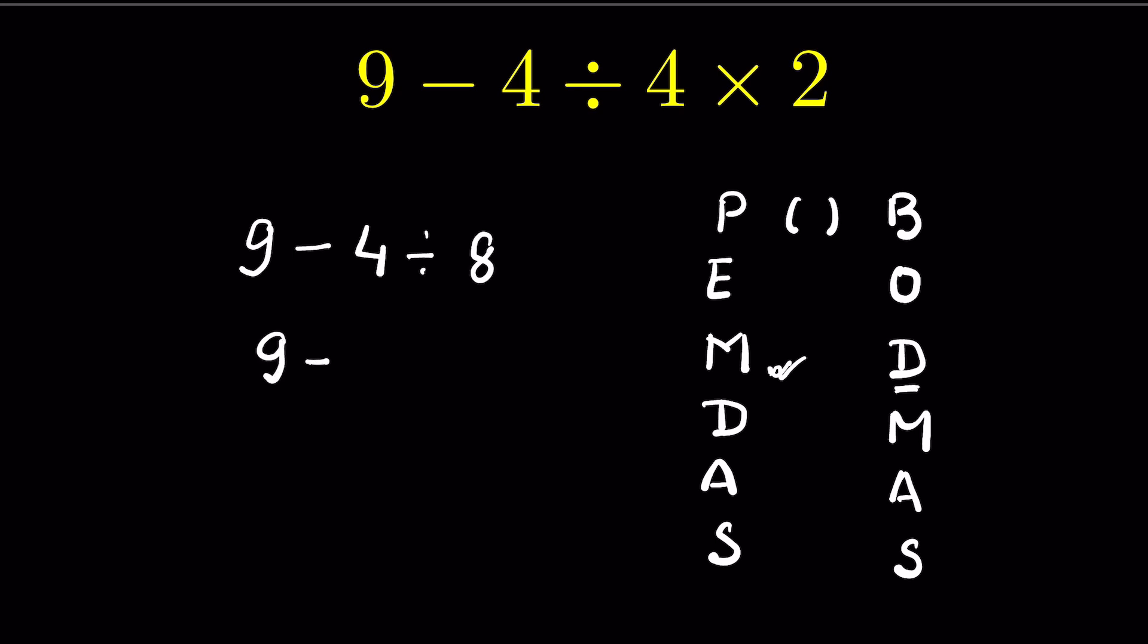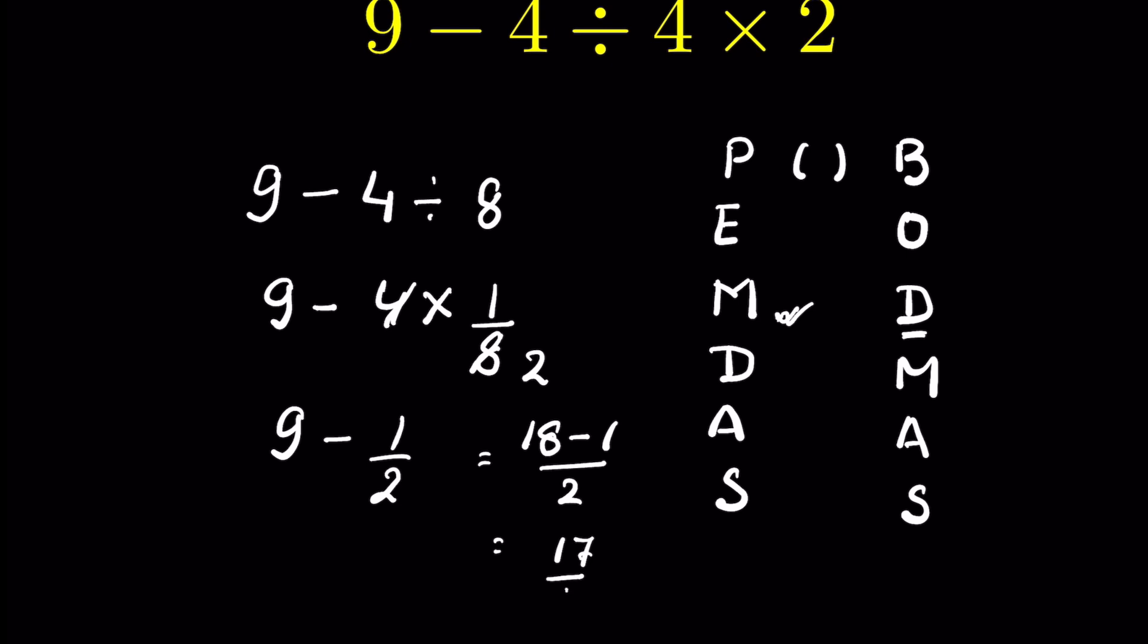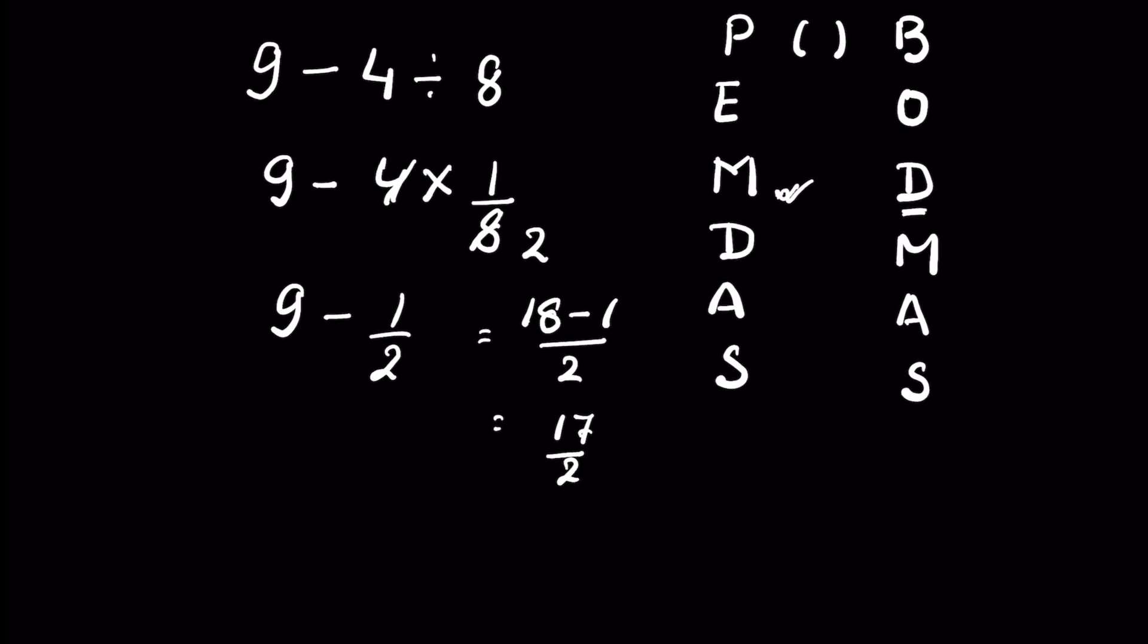So 9 minus 4 divided by 8. Division gets converted into multiplication and you write the reciprocal of 8. So 4 times 2 is 8. Now we have 9 minus 1 upon 2, or 18 minus 1 upon 2, or 17 upon 2. So in one case you get 7 as your answer, and in another case you get 17 upon 2 as your answer.